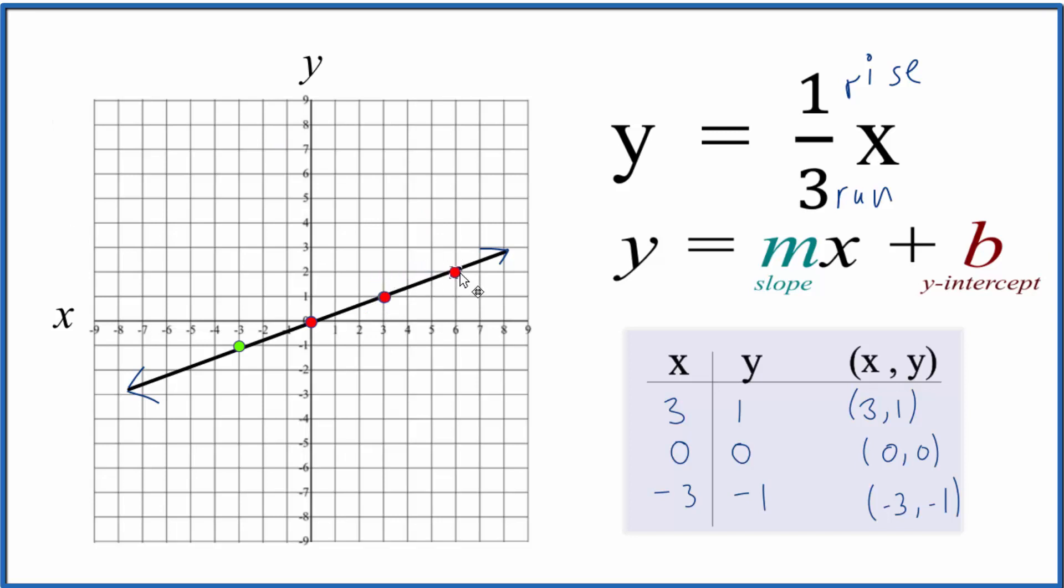These points are all on our line. We can also go in the opposite direction: down 1 and over 1, 2, 3. From there, down 1 and over 1, 2, 3. All these points are on the line for our linear equation, y equals one-third x. So we know we did the first part correctly.